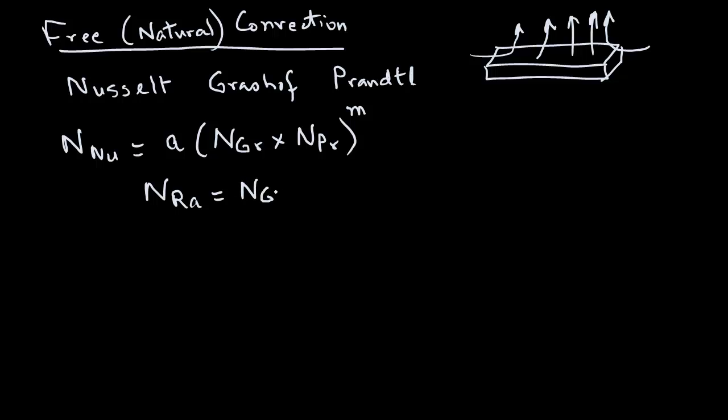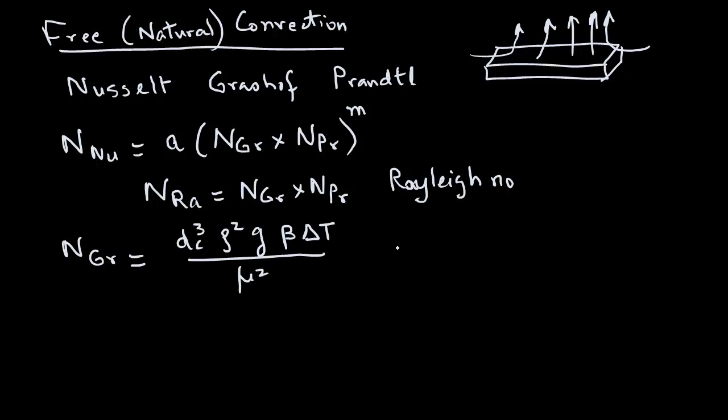The Grashof number is given by this equation: dc raised to power 3 rho squared g beta delta t divided by mu squared, where dc is the characteristic dimension. Now, this characteristic dimension will depend on what is the shape of the object and we will see that in a minute.